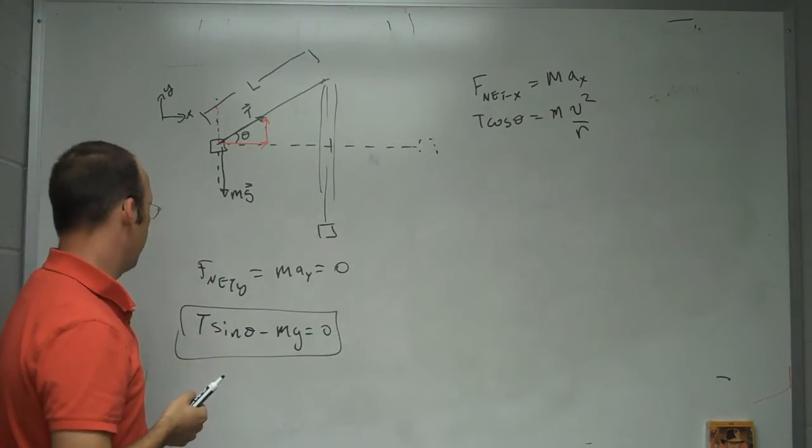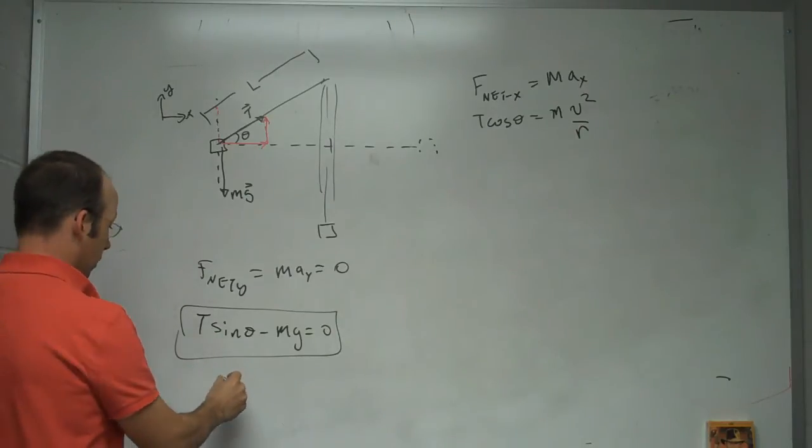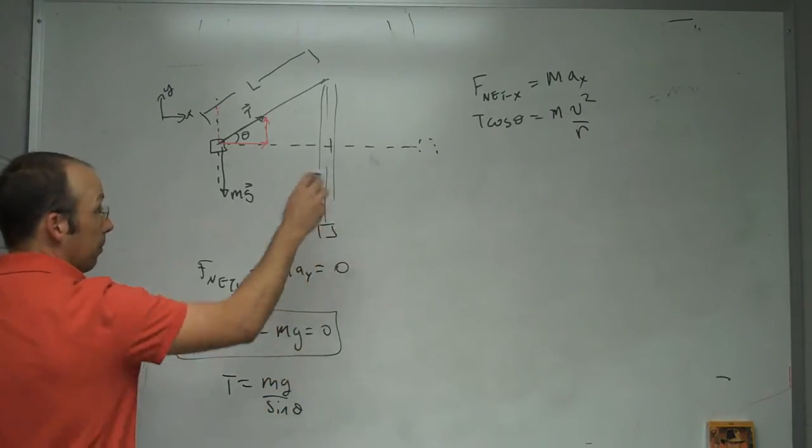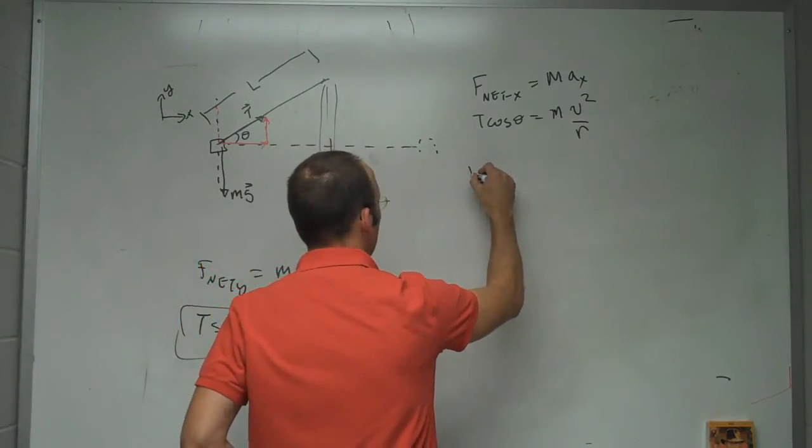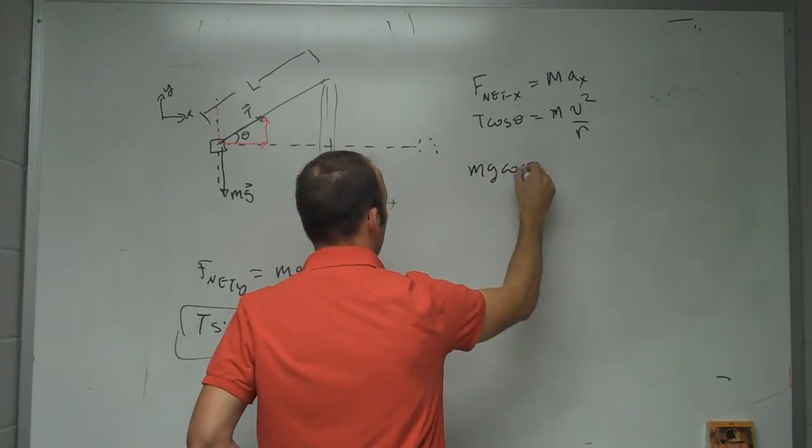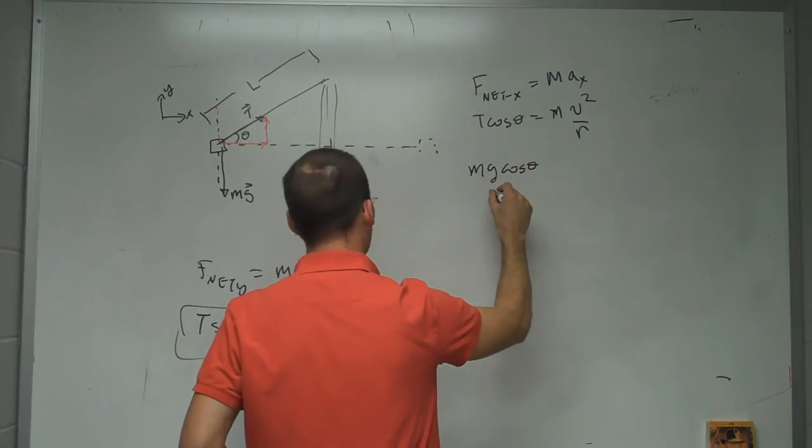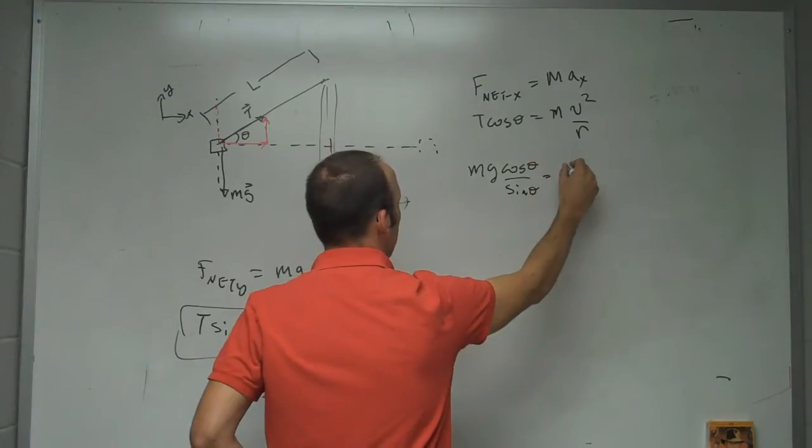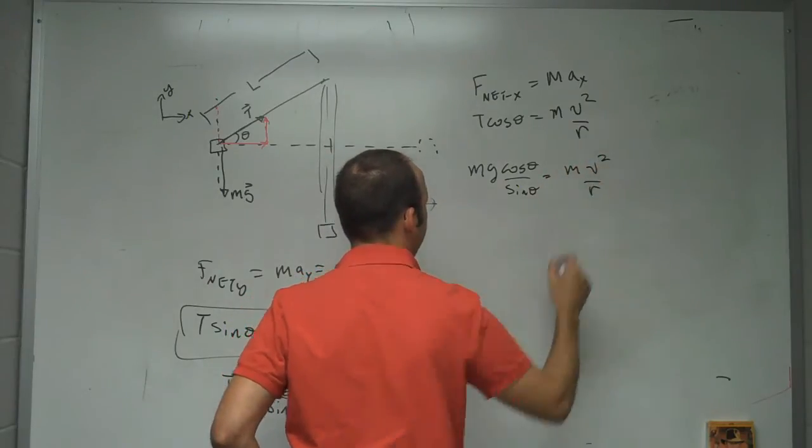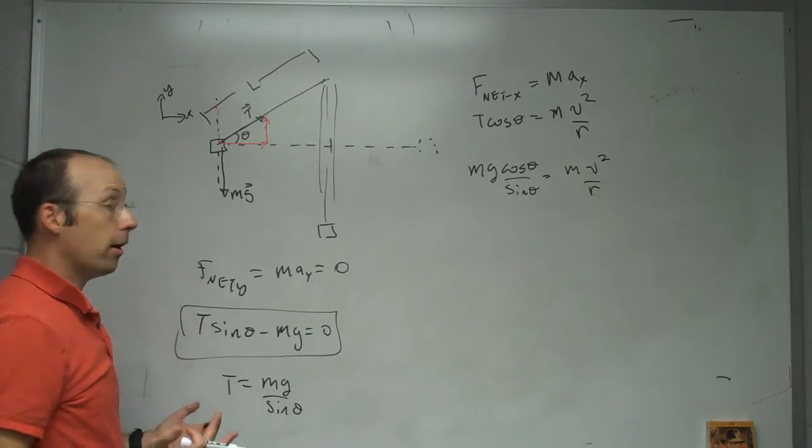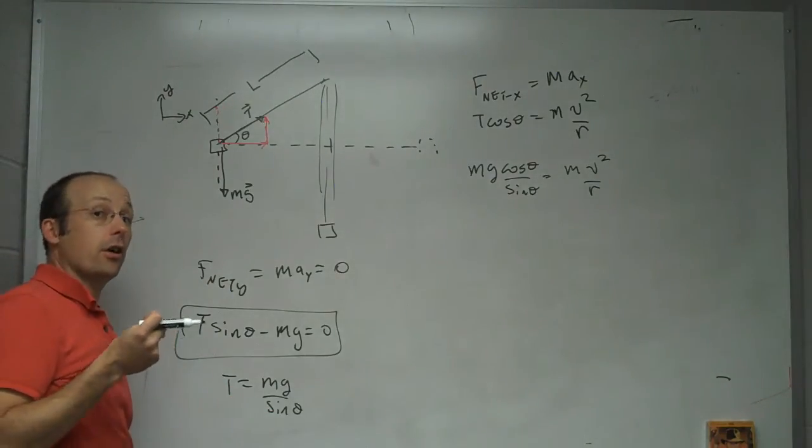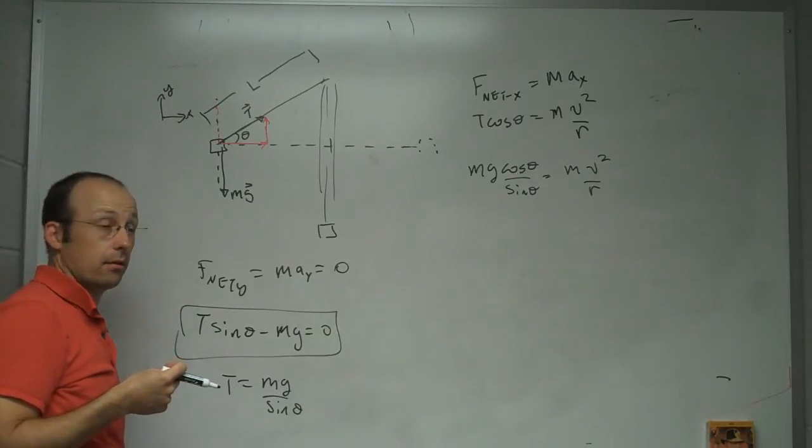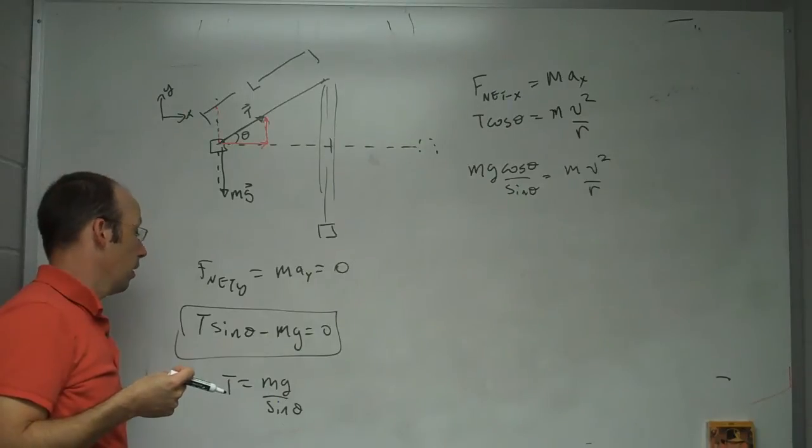So, I can measure how fast it's going by, well I'm not going to measure the velocity. I'm going to measure the period. So, what do I want to do now? Well, let me go ahead and solve this for T. T equals mg over the sine of theta and plug that in over here and I get mg cosine theta over the sine of theta equals m v squared over r. What about r? R is not a parameter that I'm actually going to measure. I'm not going to actually measure theta either. But, I can find theta from this.